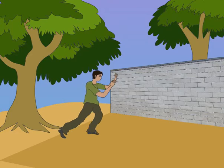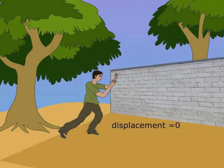Work done by a man pushing the wall is equal to zero, since there is no displacement of the wall.